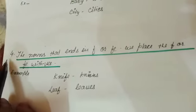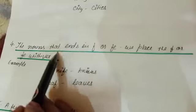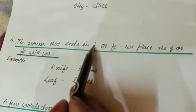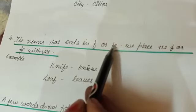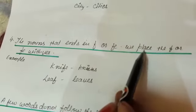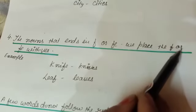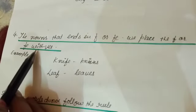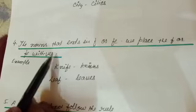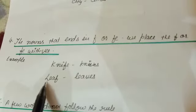Rule number 4: nouns that end in F or FE — we replace the F or FE with VES. Example: knife → knives, leaf → leaves.